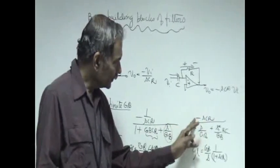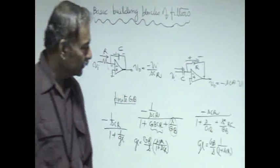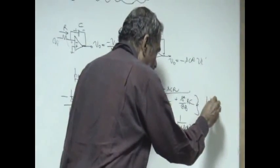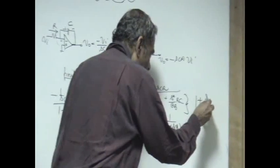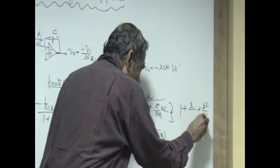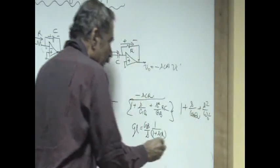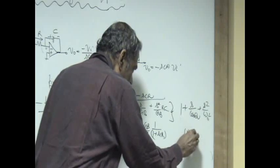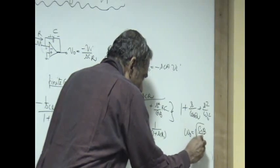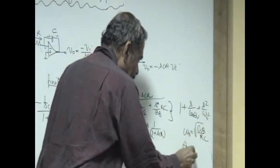The transfer function now changed from minus sCR which is ideal to a second order denominator, which is always indicated by the second order denominator we have seen in filters and control systems. It can be represented as natural frequency omega naught and omega naught into q. That means omega naught, the natural frequency of the system, is equal to g_b divided by RC.